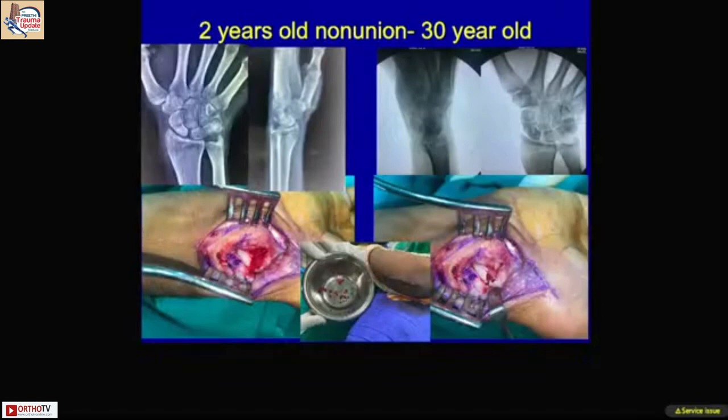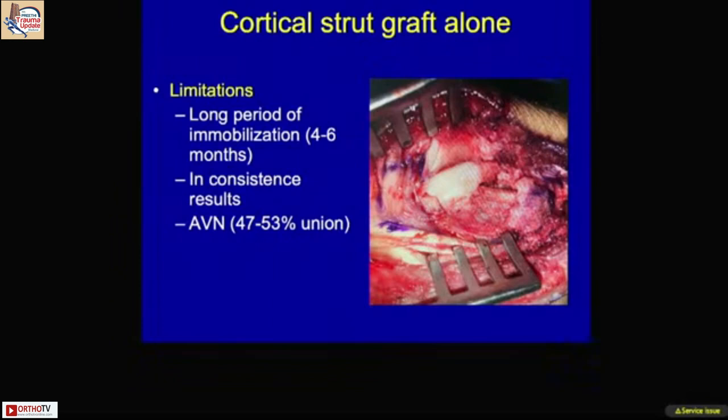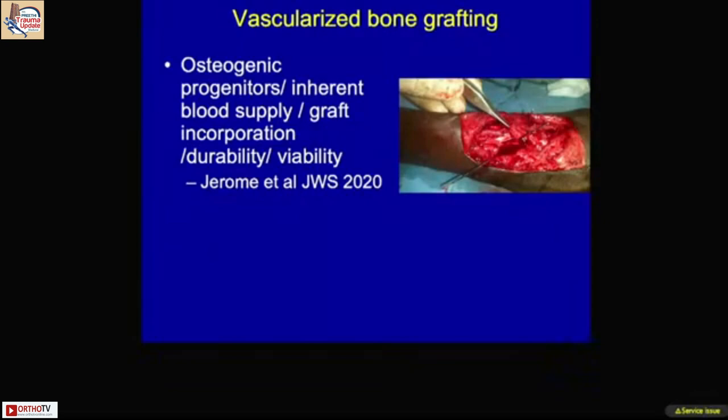There was also a patient with two years of non-union where a strut graft was used. However, the limitation of a strut graft alone without fixation is that it requires a long period of immobilization and is inconsistent with avascular conditions. This is why there is a role for vascularized bone graft, as it is osteogenic, provides blood supply, and the graft does not resorb, offering stability.